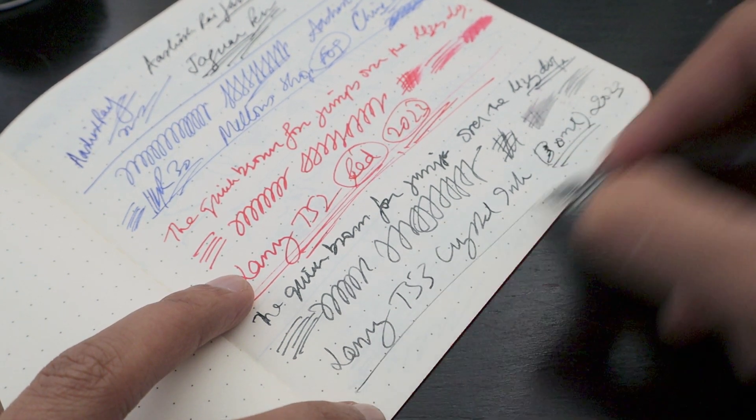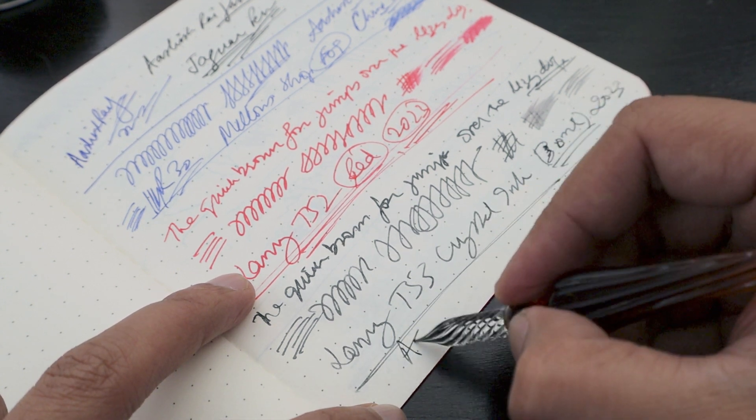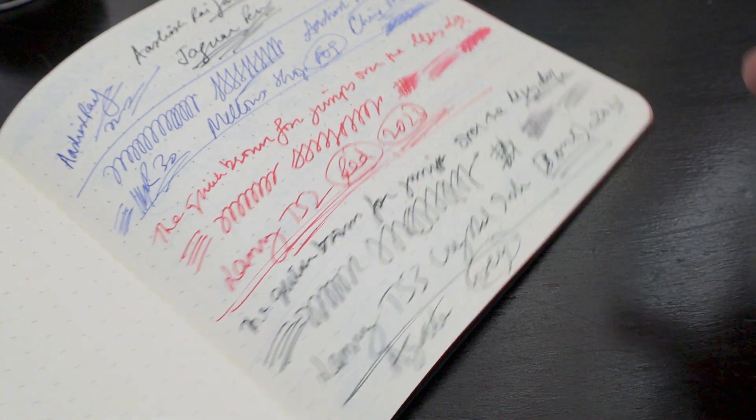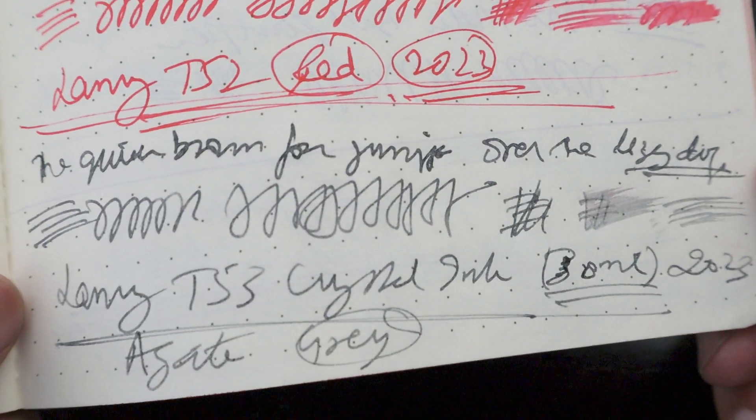This is Agate, which means gray. This is the gray coloring. This is how the ink looks like.